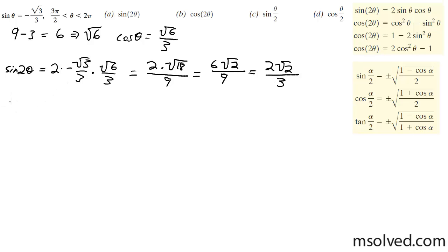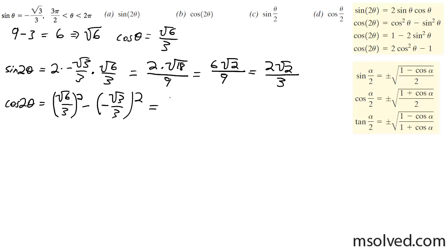Now I'll come down here and do the double angle of cosine. I'll use cosine squared minus sine squared. In this case I get the square root of 6 over 3 squared, minus negative square root of 3 over 3 squared, and we get 6 over 9 minus 3 over 9, which is equal to 3 over 9, which is equal to 1 third.